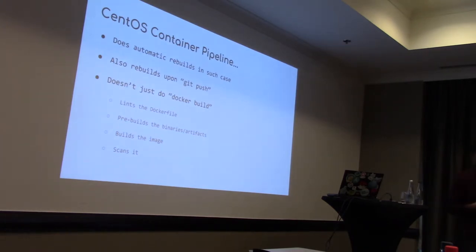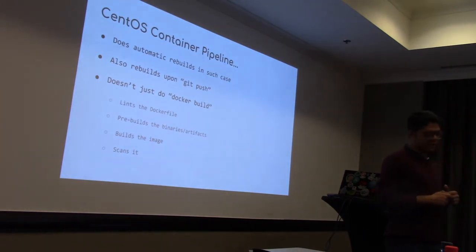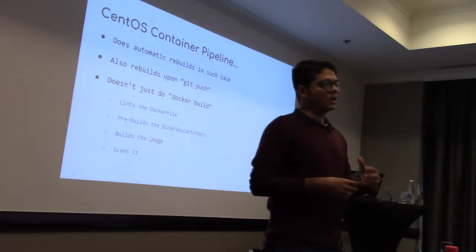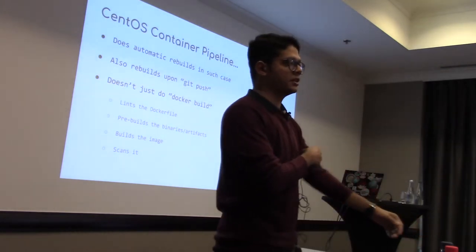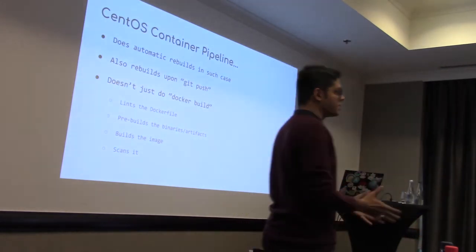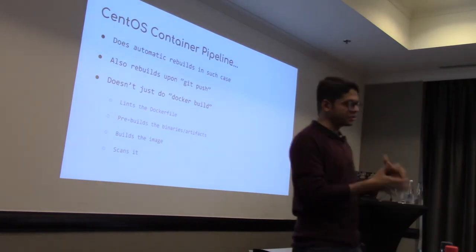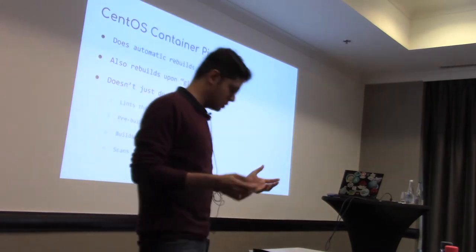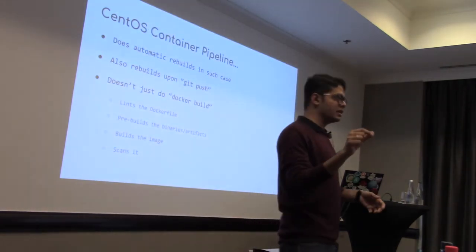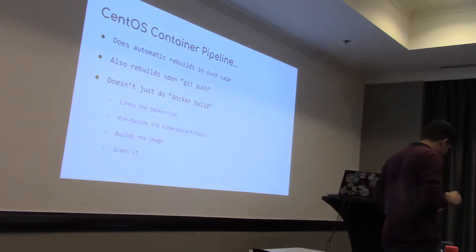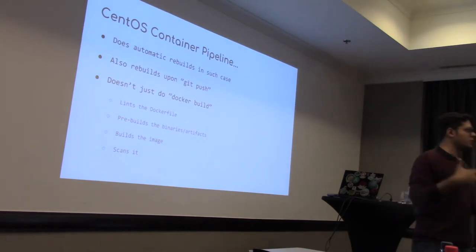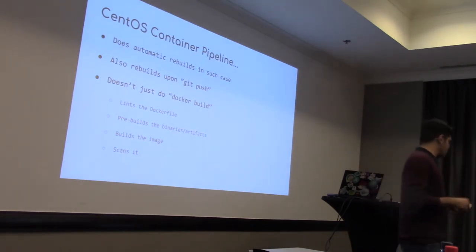The next step is an optional one: pre-build. A number of projects that build container images with us require this feature — before doing the Docker build, before actually starting to build the container image, they want to have some binary or artifacts generated. That could be a shell script in their git repository which is executed to generate the artifacts or binary, which in turn has to be copied into the container image using the COPY or ADD command in the Dockerfile. Pre-build is not required by all projects, but we have it for those who need it.